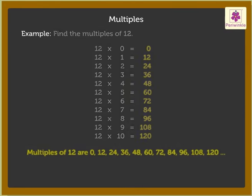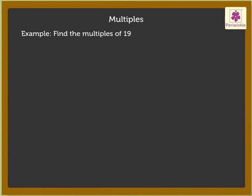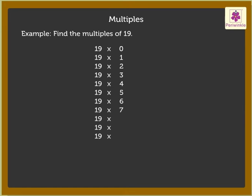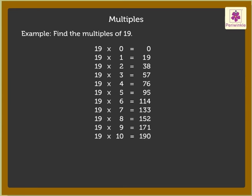Let us look at another example. Find the multiples of 19. When we multiply 19 by 0, 1, 2, 3, 4, 5, 6, 7, 8, 9, 10, and so on, we get 0, 19, 38, 57, 76, 95, 114, 133, 152, 171, 190, and so on.